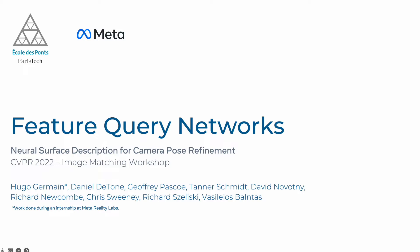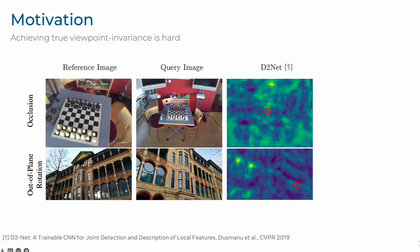The motivation for this paper stemmed from the observation that in structure-based localization settings, reference images used to compute 3D descriptors are often not aligned with the query image's viewpoints. In these examples, we show on the left post-reference images captured offline with the reprojection of a 3D point in red, and next to it the reprojection of that same point on an unseen query image. Because of occlusion and out-of-plane rotations, modern learning-based descriptors like D2Net fail to accurately predict the correct corresponding point, as demonstrated by the feature correlation map shown on the right. This simple example demonstrates the difficulty of obtaining truly viewpoint-invariant feature descriptors.